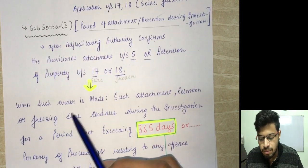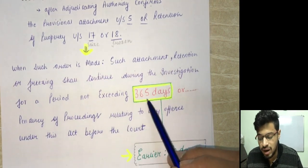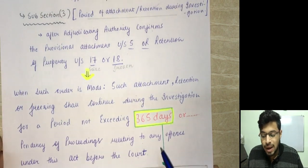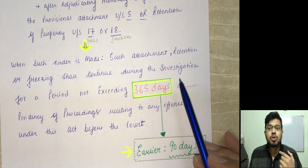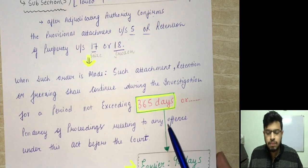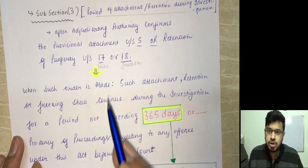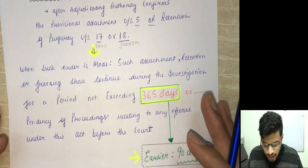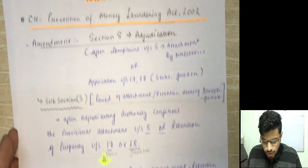When such an order is made, such attachment, retention, or freezing shall continue during the investigation for a period not exceeding 365 days, or during the pendency of proceedings relating to any offense under this act before the court. Before the amendment, this period was 90 days; now it has been increased to 365 days. So within 365 days you have to conclude the proceedings. Section 8, subsection 3 — the order with respect to attachment or retention is to be confirmed by the adjudicating authority, which is only for 365 days.